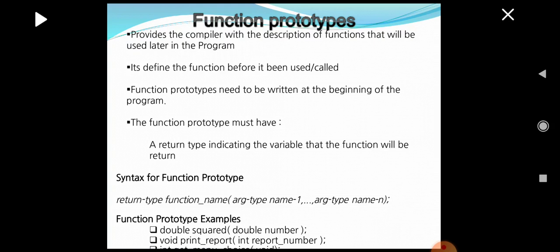For example, we can see: double squared(double number). Inside the parentheses, we have the argument type double, and the function name is squared. This particular function prototype will return values of type double.